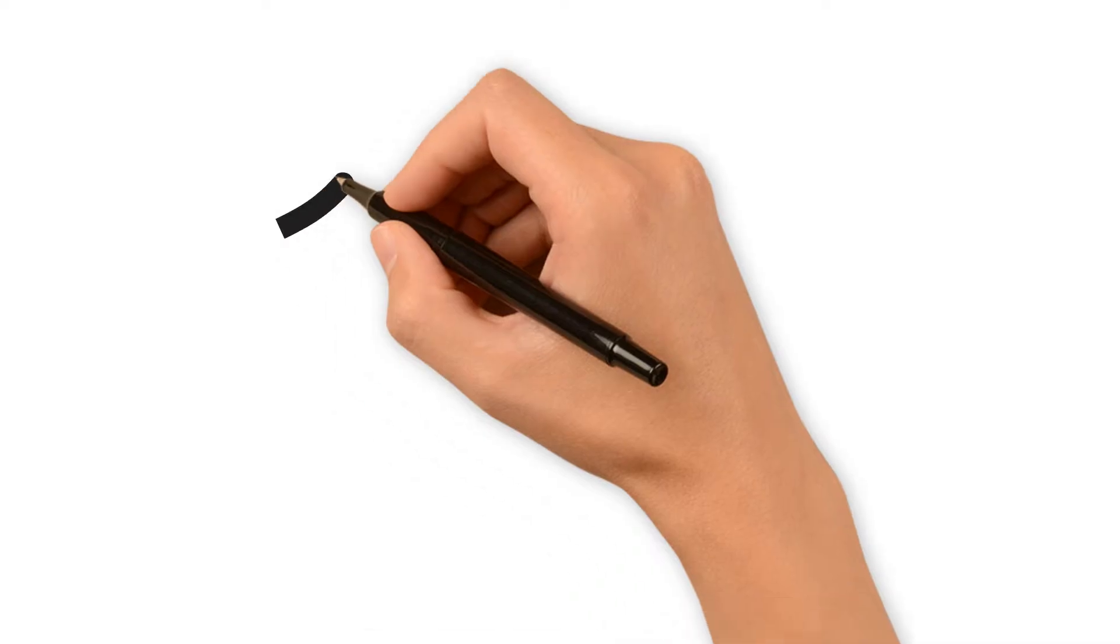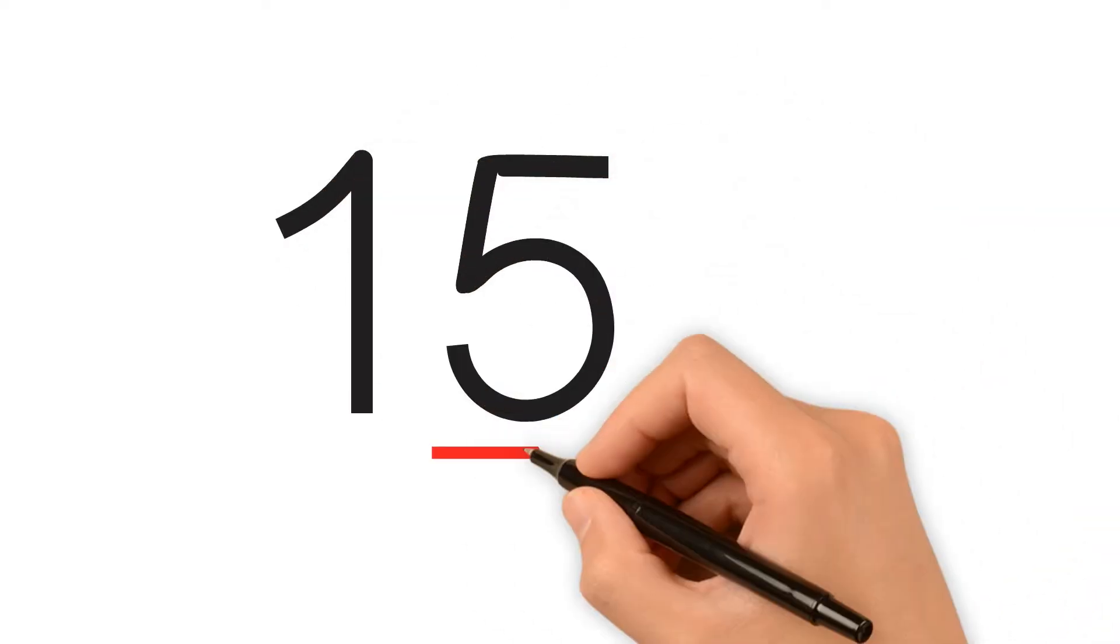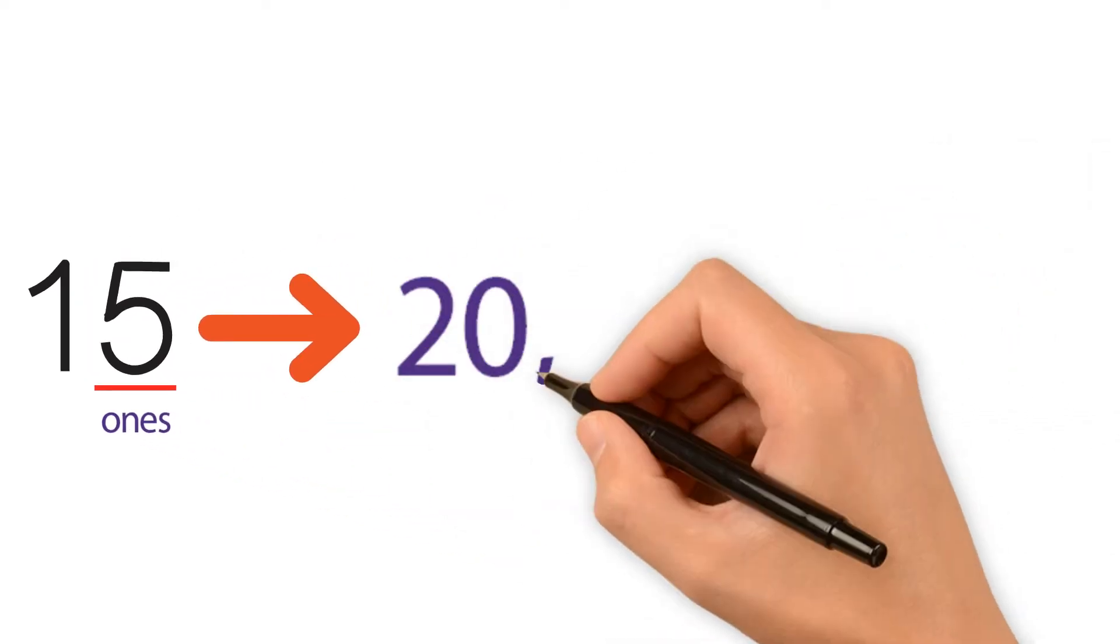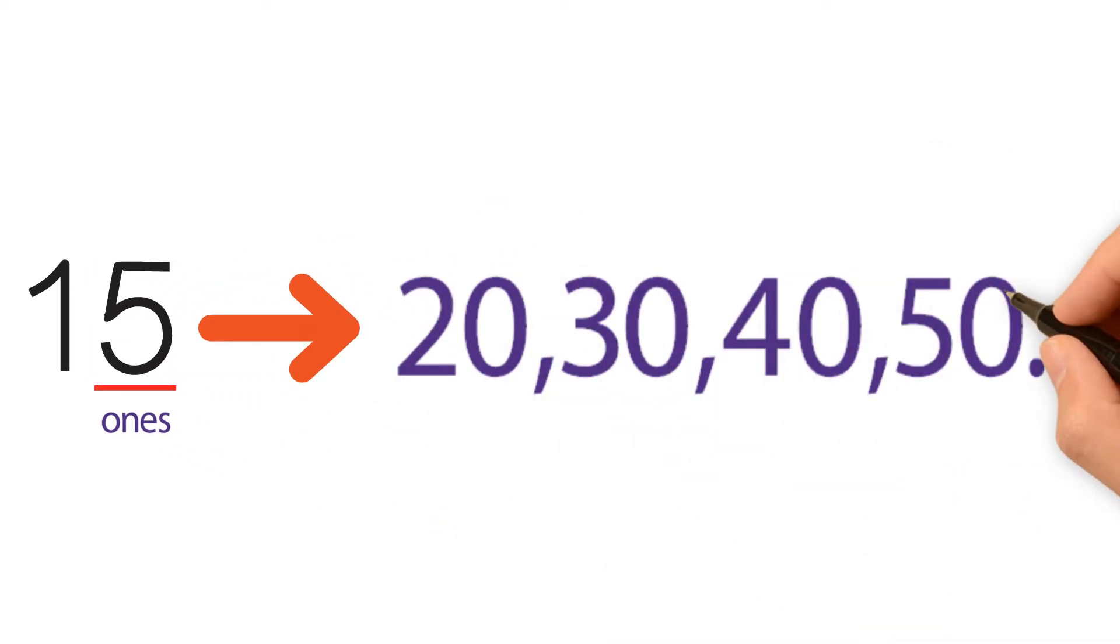When we take a couple ones from 15, we transfer them to 27 to create friendly numbers such as 10, 20, 30, 40, 50, and so on. Let's try an example.